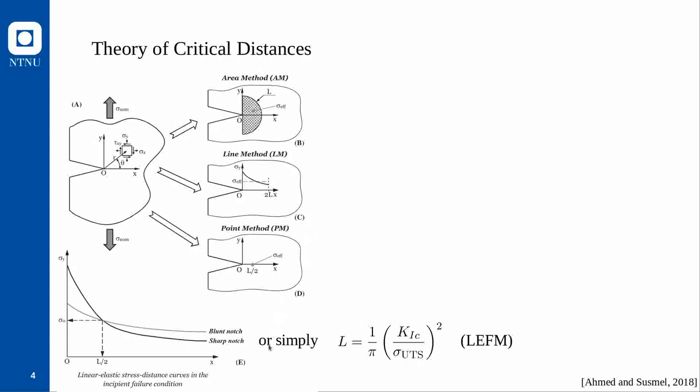There are two methods of obtaining L: the robust method, which is calibration by experimental data, or the simpler formula-based method. In the robust method, one takes the bluntest and sharpest notch, performs fracture experiments, and performs FEM computations using the fracture forces as boundary conditions. One plots the maximum principal stress over distance in the notch bisector line, and for consistency with the point method, those two curves must intersect at L/2. The stress value at that intersection is the material strength sigma zero.